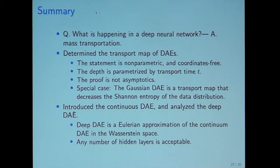This is the summary. The research question is what is happening in a deep neural network? My answer is mass transportation. We determined the transport map of denoising autoencoders. The statement means nonparametric and coordinate free. The depth is parameterized by transport time T. The proof did not use asymptotics. I also introduced a continuous denoising autoencoder and analyzed deep denoising autoencoder. By introducing continuous denoising autoencoder, we can accept any number of hidden layers.